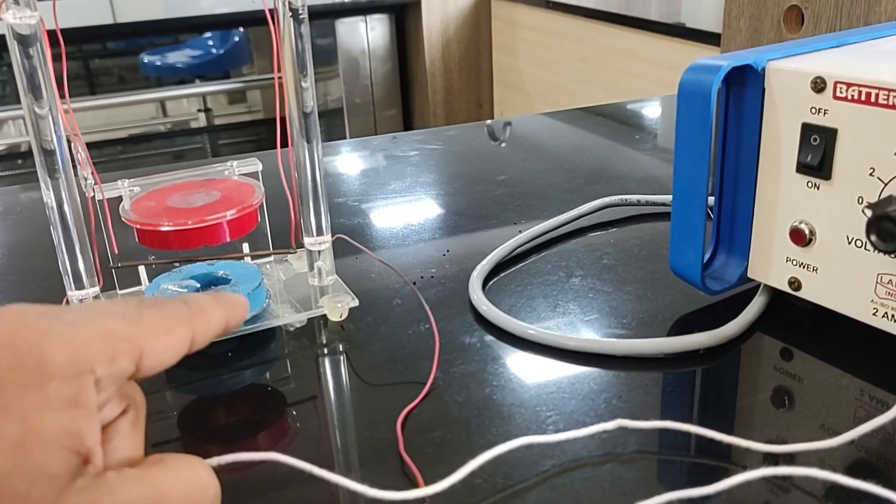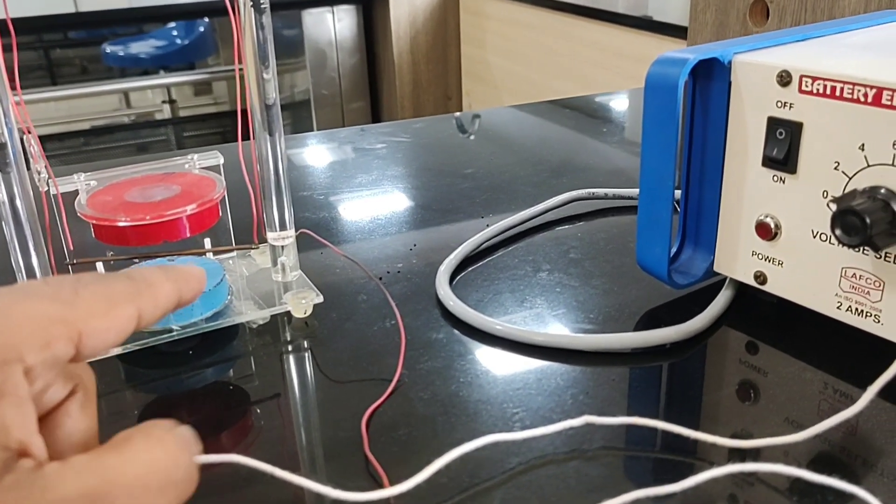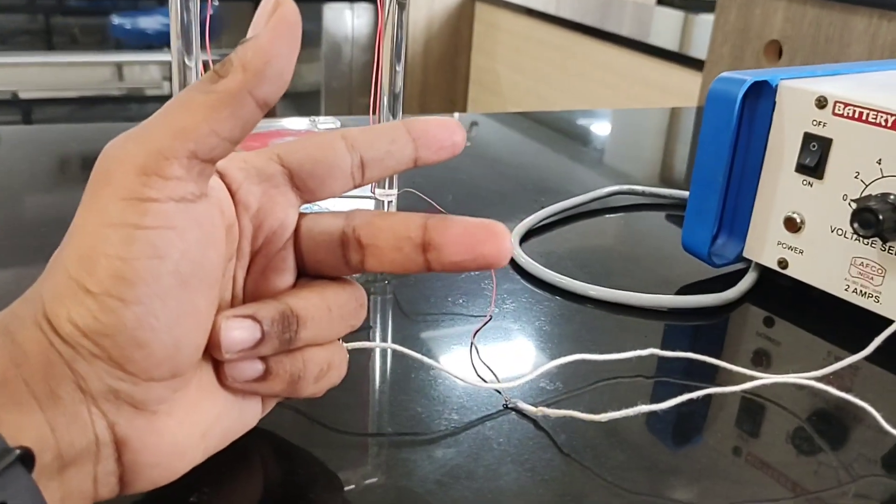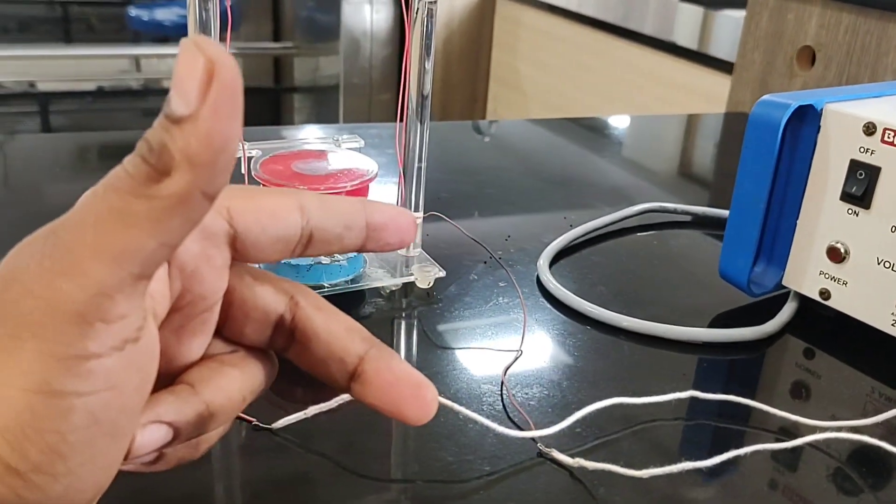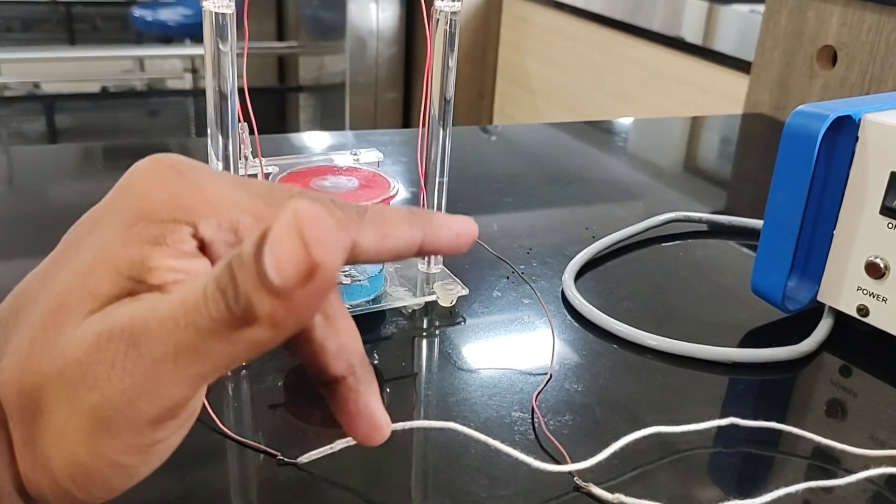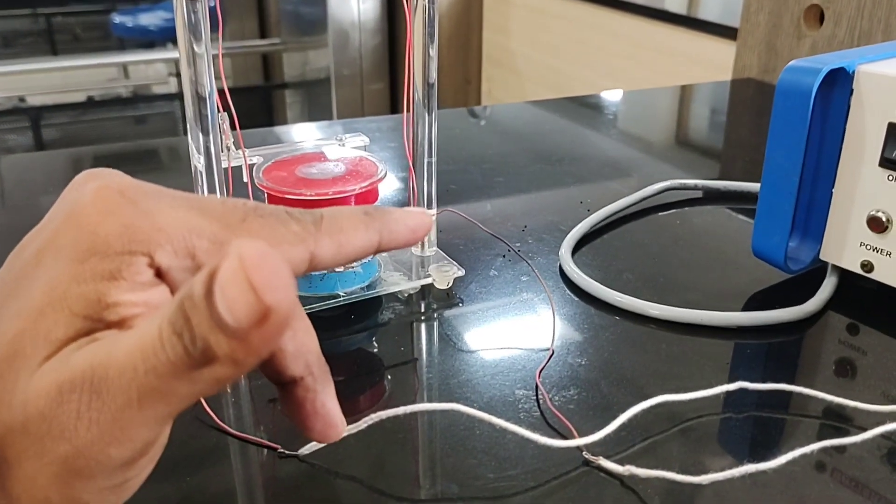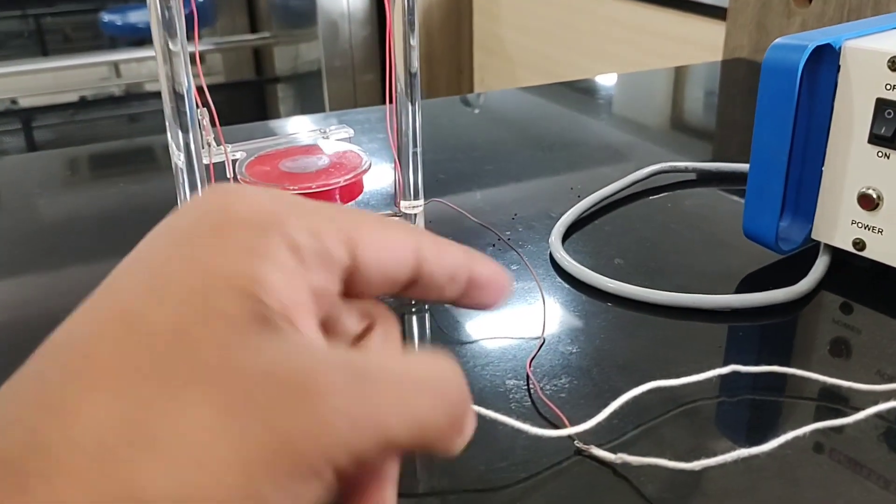See, the direction of current along the conductor, we can put our forefinger in the direction of current, and north to south, the second finger in the direction of magnetic field, and the thumb showing the direction of force.